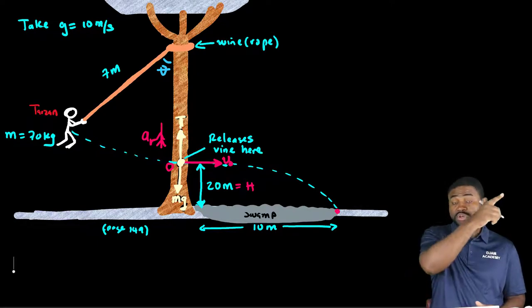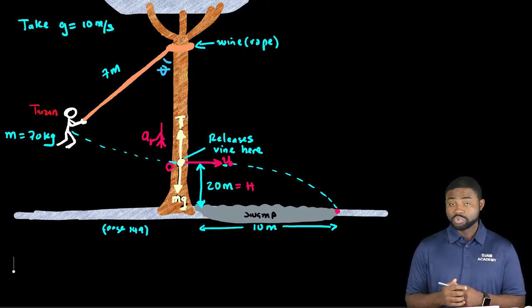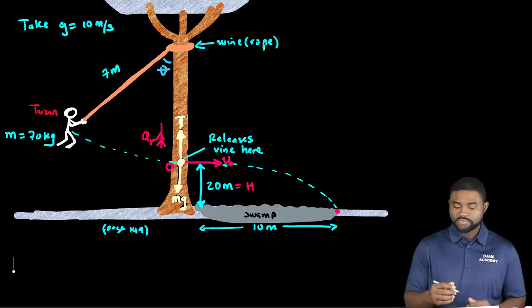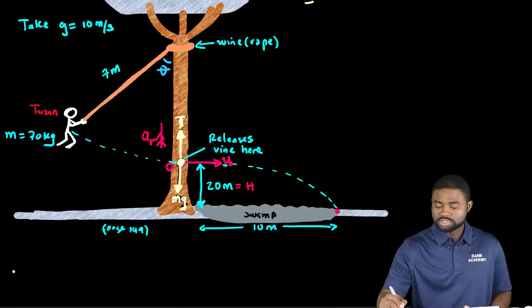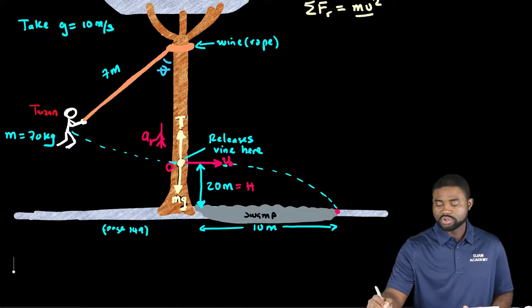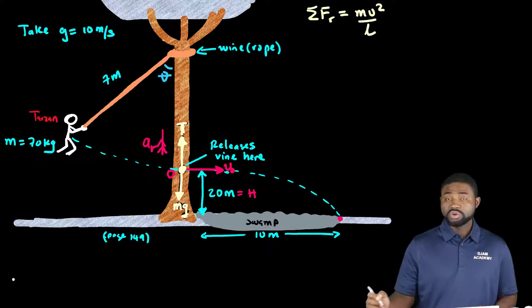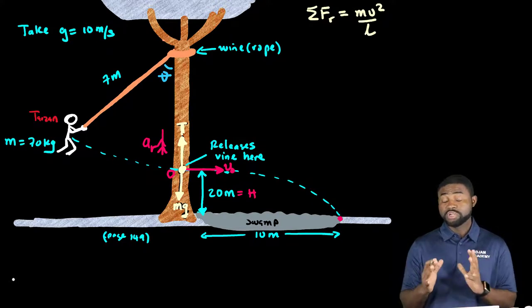Also he swings on an arc which means that he is performing circular motion and if he is in circular motion then we know that the sum of forces acting on him is equal to mv squared all divided by l where l is the radius of the circle which happens to be the length of the rope.